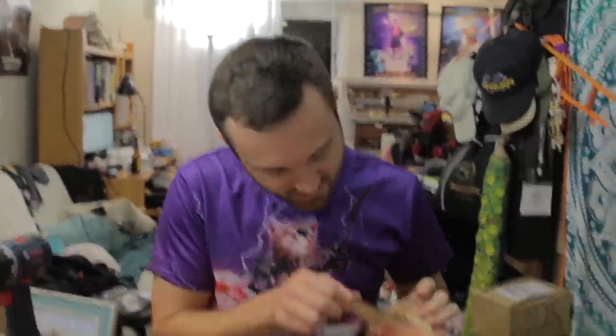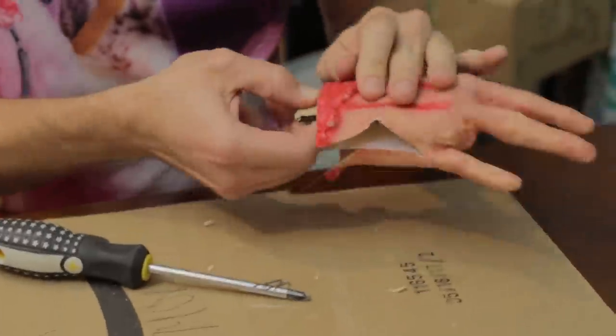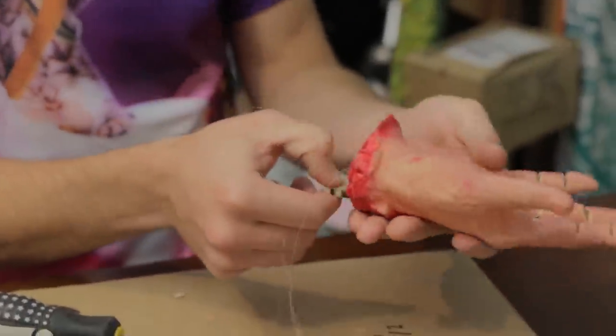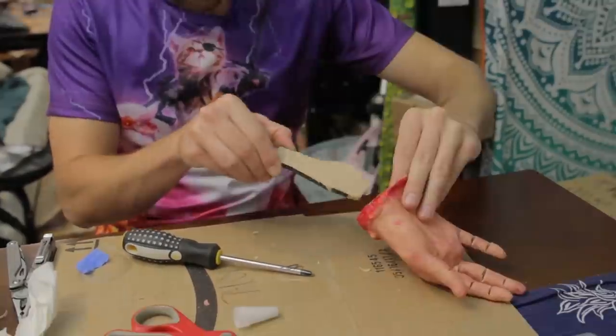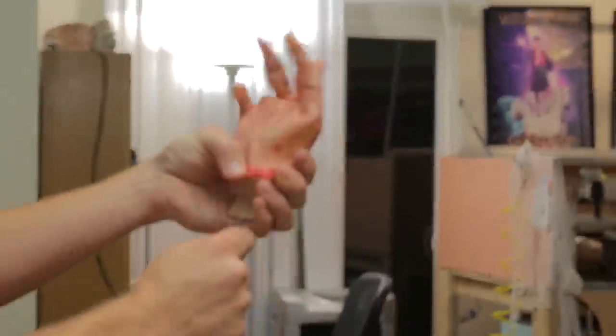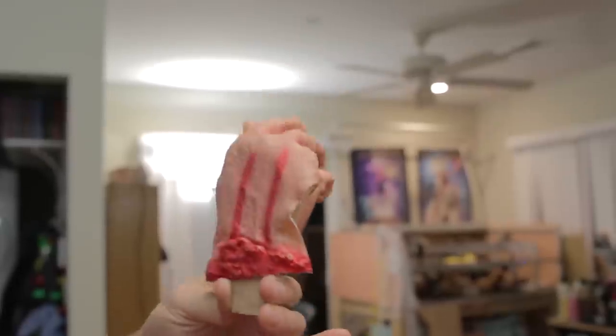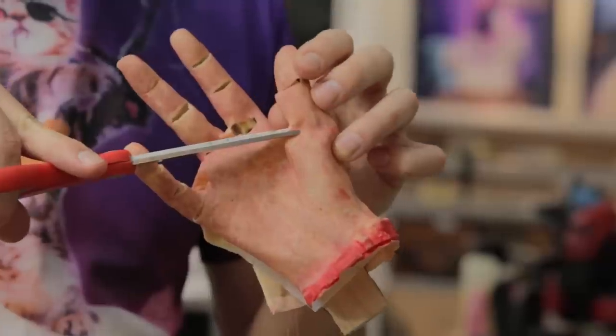Now we're gonna do something that we're probably gonna end up regretting, and that is to superglue this main structure to the inside of the hand. Hey, that's not bad. This thing would work great if there was no skin.